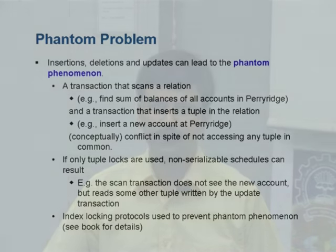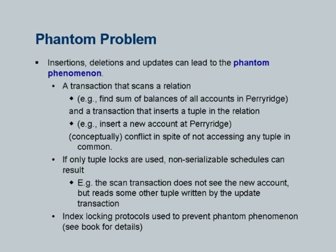You actually need a different kind of lock which not only locks all the tuples currently in the Perry Ridge branch, but conceptually locks also any tuple which may be inserted subsequently with branch name Perry Ridge. How do you implement this? There are interesting and efficient solutions, but I should mention that Oracle and PostgreSQL do not prevent the phantom problem — they very much allow this to go ahead even with snapshot isolation. Although in an earlier slide we said repeatable reads are guaranteed therefore no phantom — that claim is wrong. The phantom problem very much occurs with snapshot isolation as implemented in Oracle and PostgreSQL.